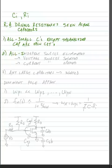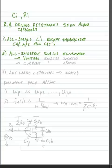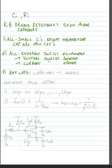All independent sources are eliminated. This means our voltage sources are short-circuited and our current sources are open-circuited. Any large capacitors in our analysis — capacitors that we might label as infinite or as bypass capacitors — are going to be short-circuited.